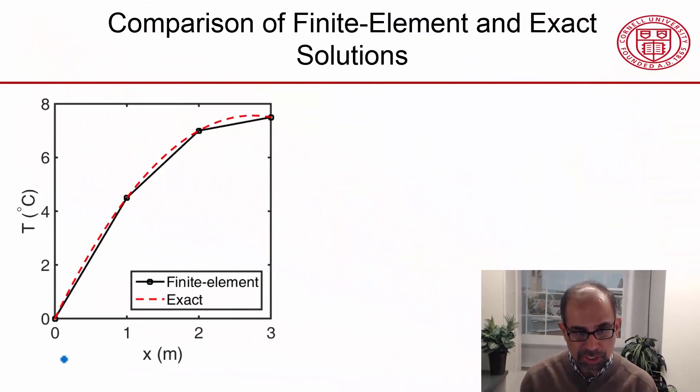Here is a comparison of the temperature between the finite element and exact solutions. On the vertical axis, I have plotted the temperature. On the horizontal axis, I have plotted the distance along the bar. The black line is the finite element solution, and the symbols indicate the nodal values. The dashed red line is the exact solution.